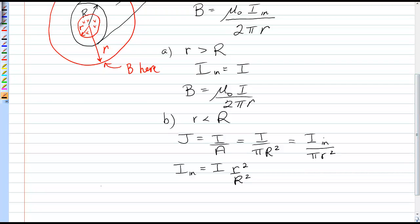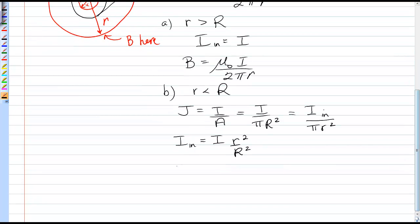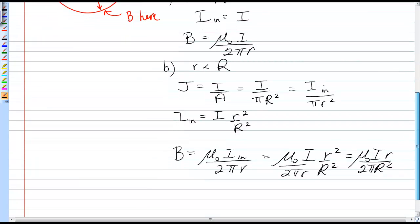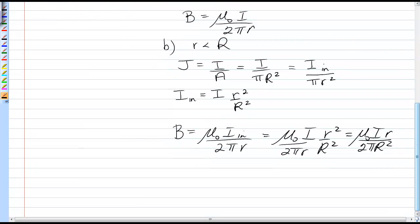This goes into Ampere's Law, so we have B equals mu naught I in over 2 pi r, and I in now is the total current r squared over R squared over 2 pi r. Here, one of those r's cancels, and we get the magnetic field inside the wire is proportional to r.